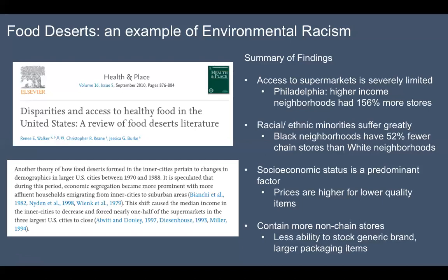Access to supermarkets is severely limited — researchers looked at whether you have public transportation, a car, or if it's safe to walk home at certain hours. In Philadelphia, higher-income neighborhoods had 156% more grocery stores than lower-income neighborhoods — and this isn't even talking about food quality, just having a grocery store at all. Black neighborhoods have 52% fewer chain stores than white neighborhoods across the entire country. Prices are higher for lower-quality items because these areas contain more non-chain stores. Chain stores buy in bulk and can absorb profit losses across locations, but non-chain stores can't stock generic brand items and have to stock smaller packaging, so you pay more money for less food.